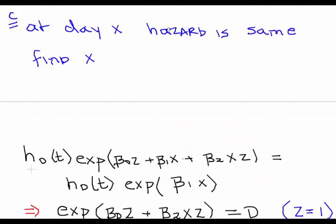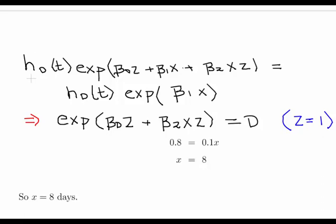Looking at part C — I had to rewrite it due to typesetting issues. In a nutshell, there's some value of X where the hazard for both treatments — the previous and the new — is the same. We just have to find X. What I'm going to do is write out the hazard for both treatments. It's more or less the same except in one case Z equals 1 and in the other Z equals 0.